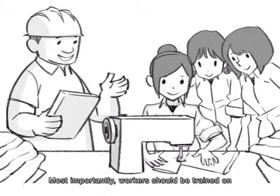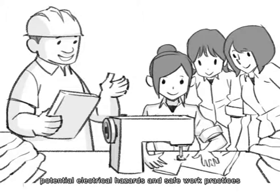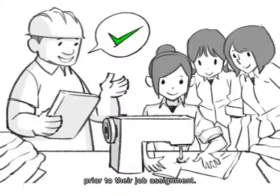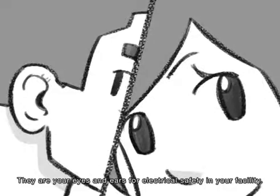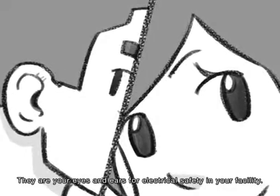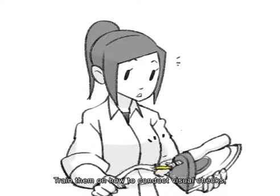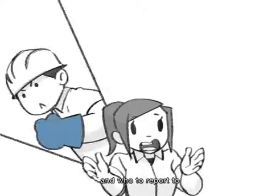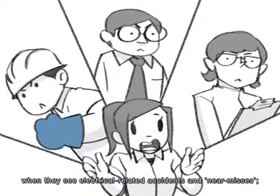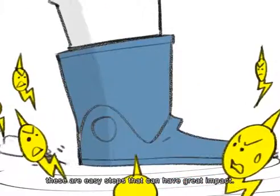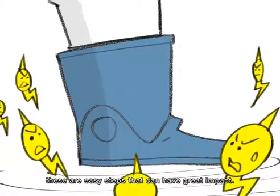Most importantly, workers should be trained on potential electrical hazards and safe work practices prior to their job assignment. They are your eyes and ears for electrical safety in your facility. Train them on how to conduct visual checks and who to report to when they see electrical related accidents and near misses. These are easy steps that can have great impact.